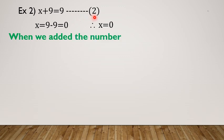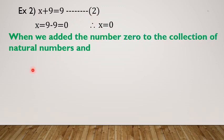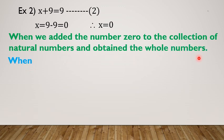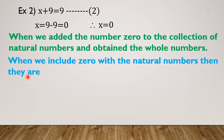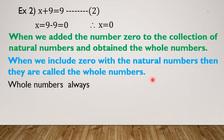we added the number 0 to the collection of natural numbers and obtain the whole numbers. So when we include 0 with the natural numbers, they are called whole numbers. Whole numbers always start from 0, 1, 2, 3, 4, up to infinity.